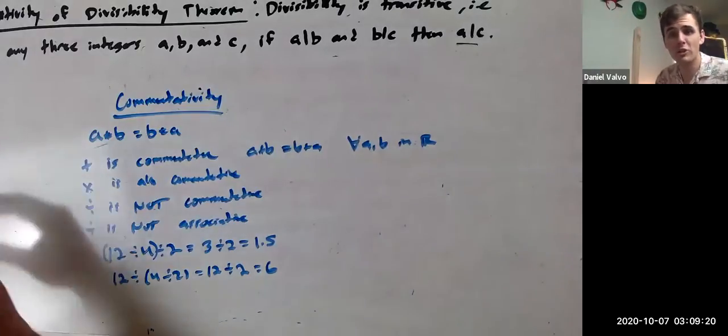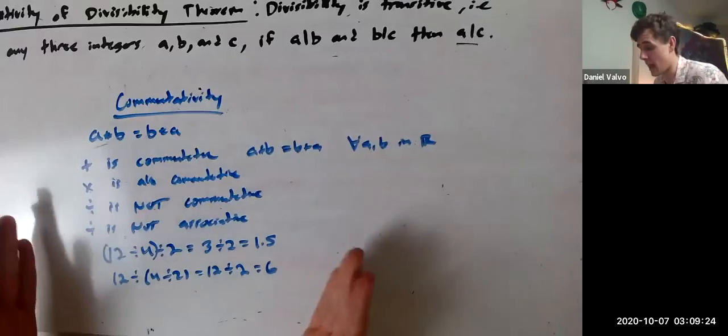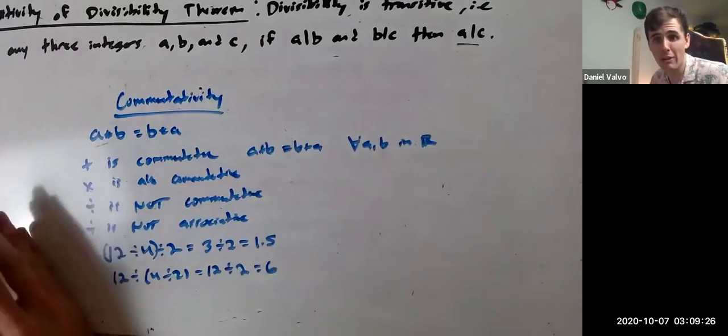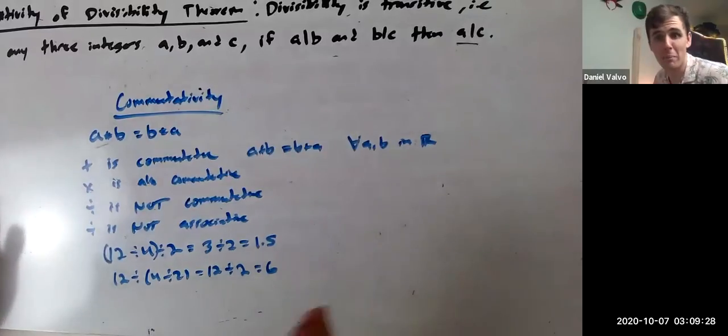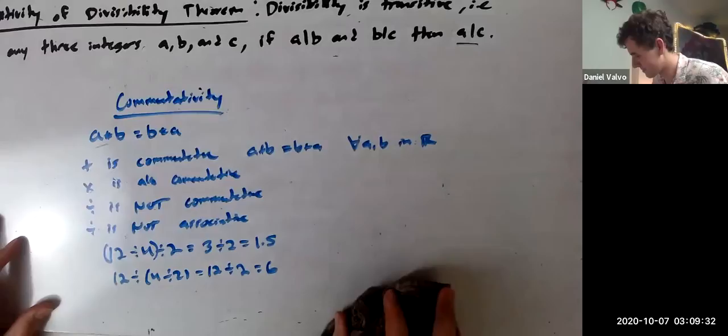So the point is, commutativity, associativity, they're just names that we give to operations that have certain nice properties. Some have them, some don't. It doesn't matter if you're in logic, math, whatever you're in.